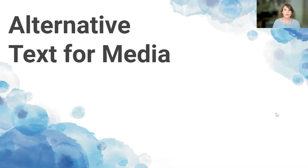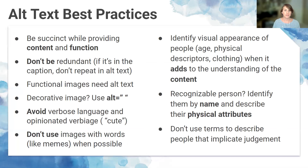Alt text best practices: be succinct but thorough with content and function — you don't need to repeat anything already in the caption. Functional images need alt text to display their purpose. Decorative images like icons from Font Awesome should be coded, not used directly on a page. Avoid extravagant or opinionated language — for example, don't use 'cute' as a descriptor for an image of a puppy. It's also best to avoid images with text on them, like memes or images of tables or graphs.